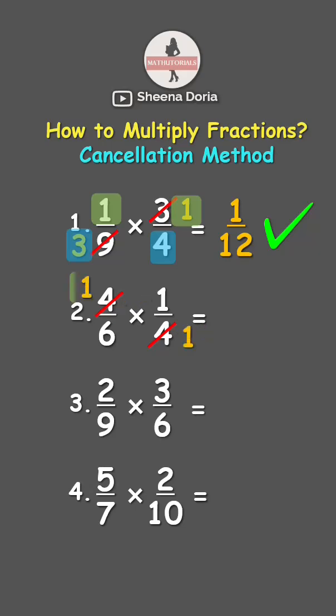Now let's multiply across. 1 times 1 is 1. 6 times 1 is 6. Answer: 1/6.